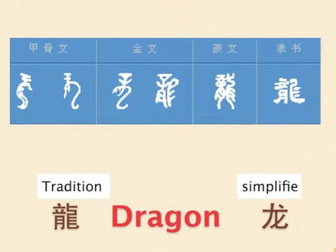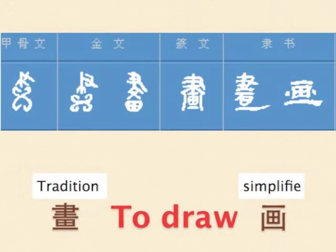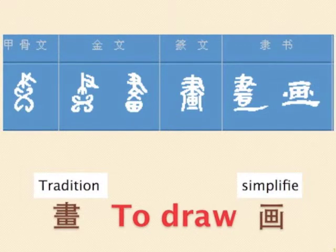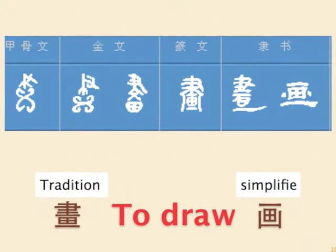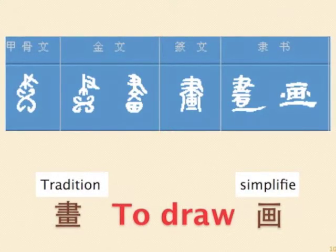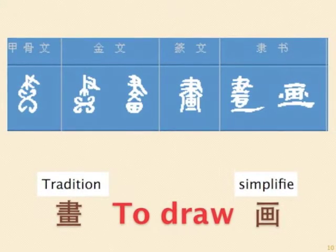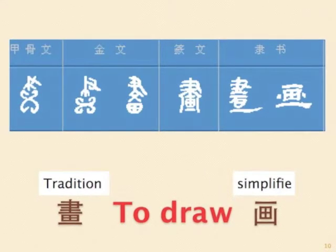Next word: to draw. The ancient script of the word represents a hand grabbing a brush pen to draw. Later on, both the upper and lower parts were complicated with more strokes in becoming the traditional form. The simplified form simplifies both upper and lower parts and mimics the regular script.